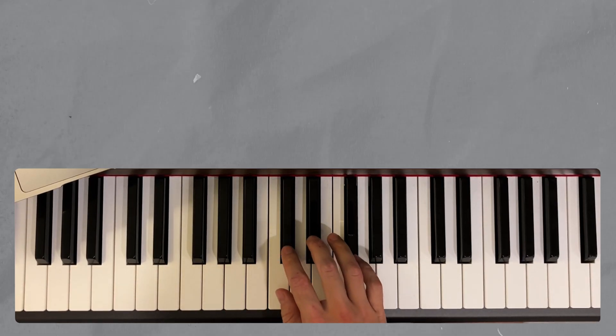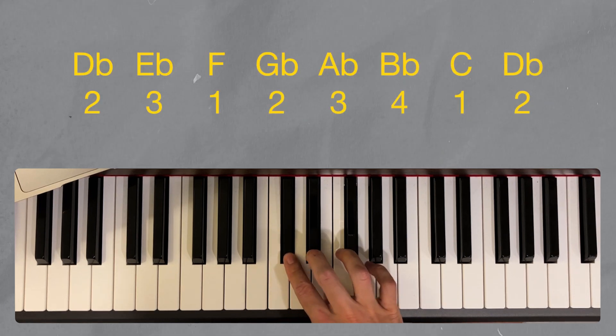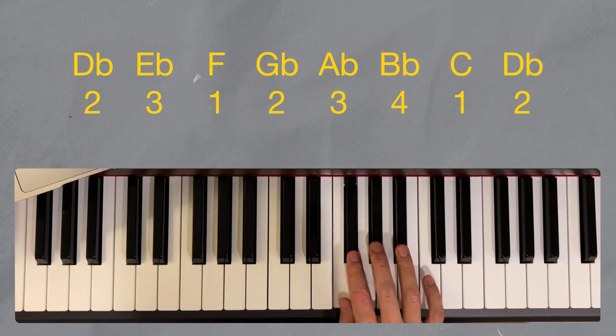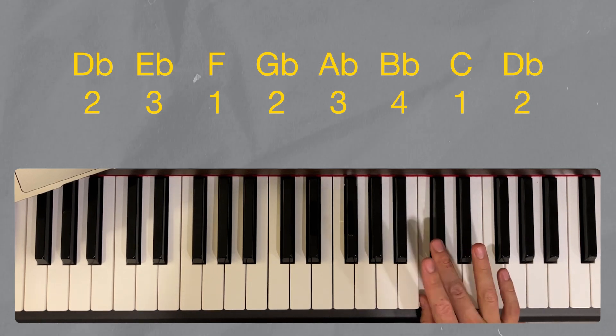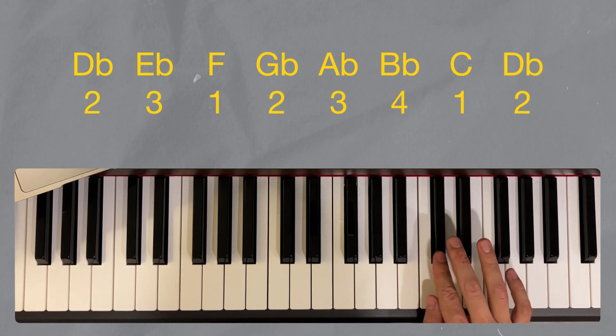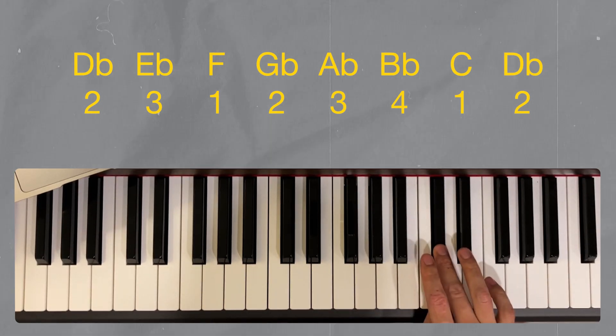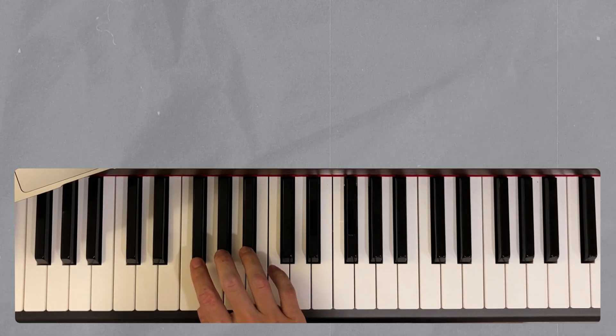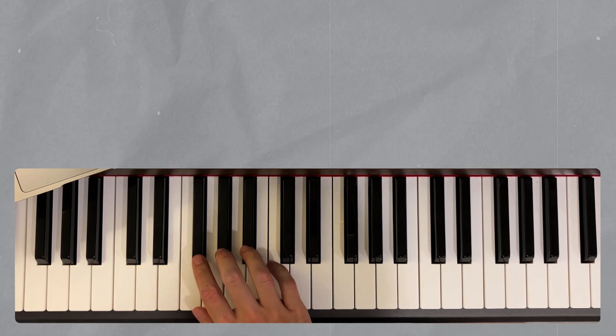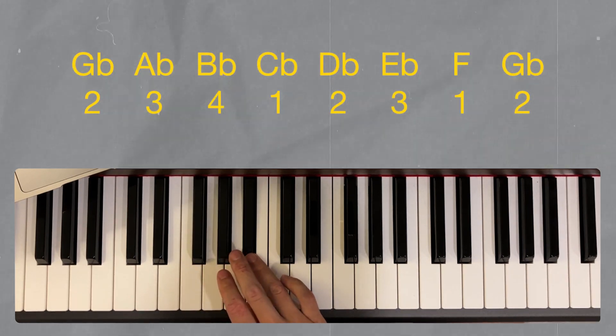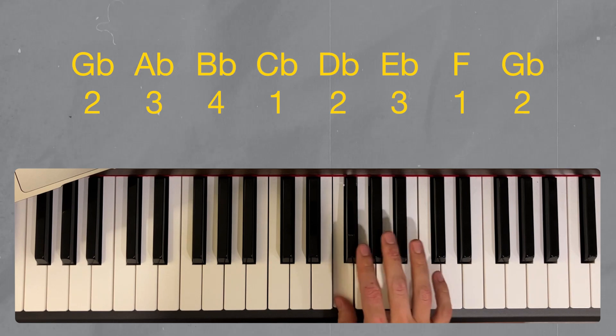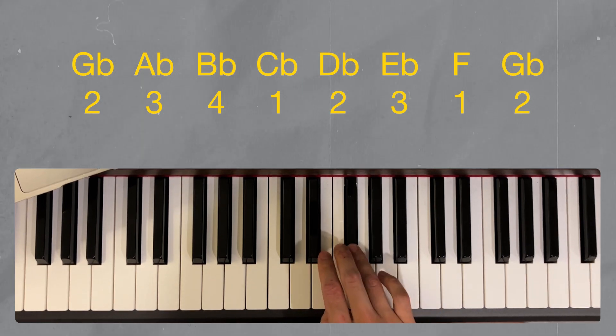For D flat, I have 2, 3, 1, 2, 3, 4, 1, sometimes 2 or 3 or 4 will do. G flat I'm starting with 2, 2, 3, 4, 1, 2, 3, 1, 2 or 3 or 4.